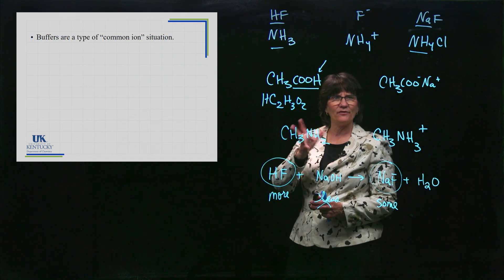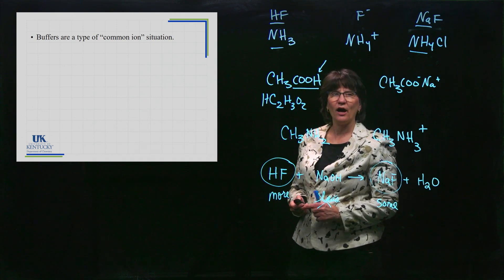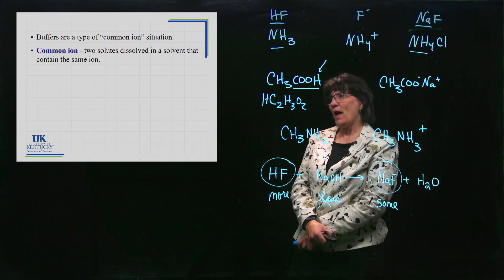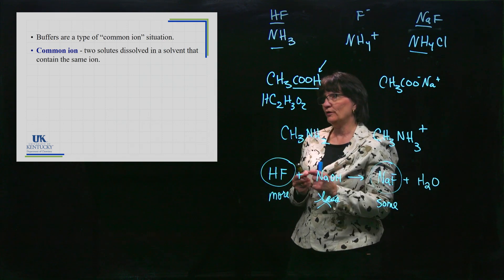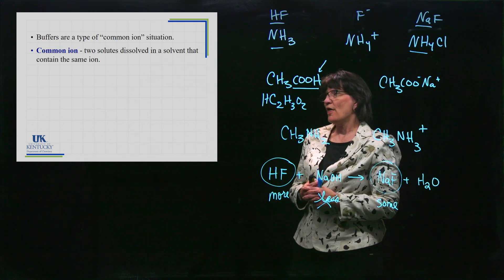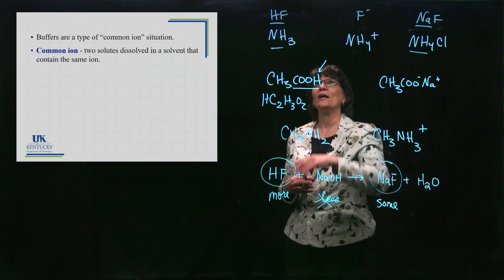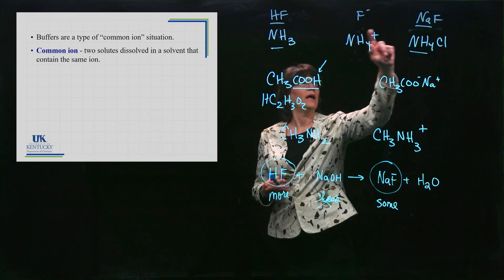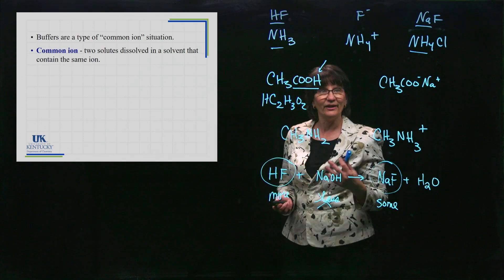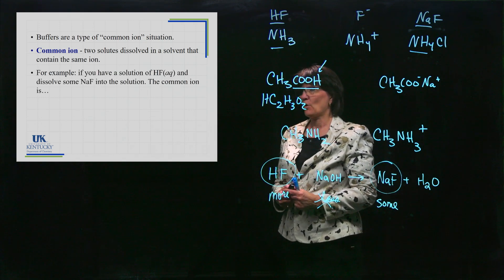I said at the beginning that buffers and common ions go together. So we have to realize what a common ion is. We're going to define it: you have two solutes, two things being dissolved in a solvent, and our solvent will be water, that contains the same ion - that's the common ion. If I took this solution and this solution and mixed them together, they have something in common - they have an ion in common.